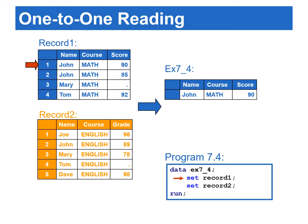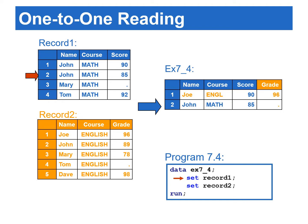Let's see how one-to-one reading works from this example. Notice that both name and course variables exist in both data sets. The first set statement starts reading the first observation from record one data set first. Next, the second set statement reads the record two data set. Since the variables name and course are also in the record two data set, the values of these two variables in the second data set replace the values read from record one.